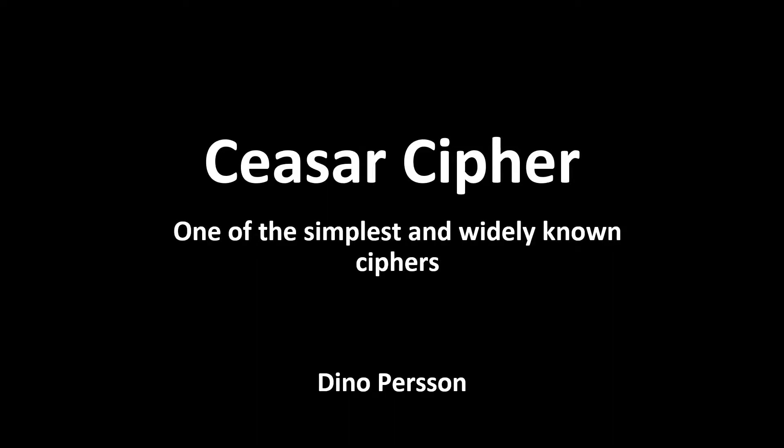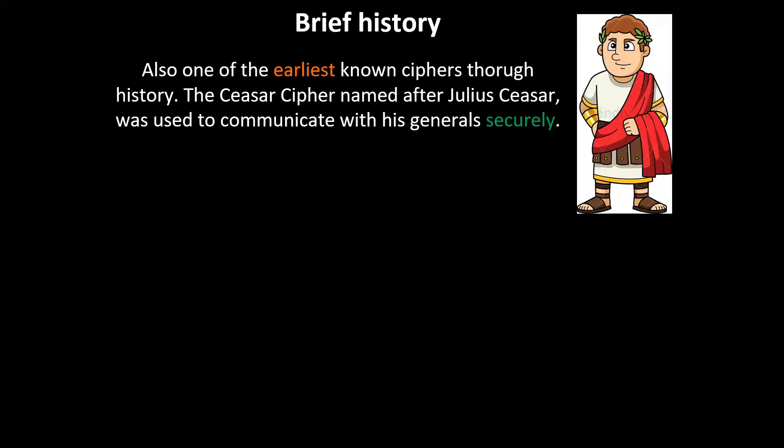The Caesar cipher is one of the simplest and widely known ciphers. It is also one of the earliest known ciphers throughout history. The Caesar cipher, named after Julius Caesar, was used at the time to communicate with his generals securely.